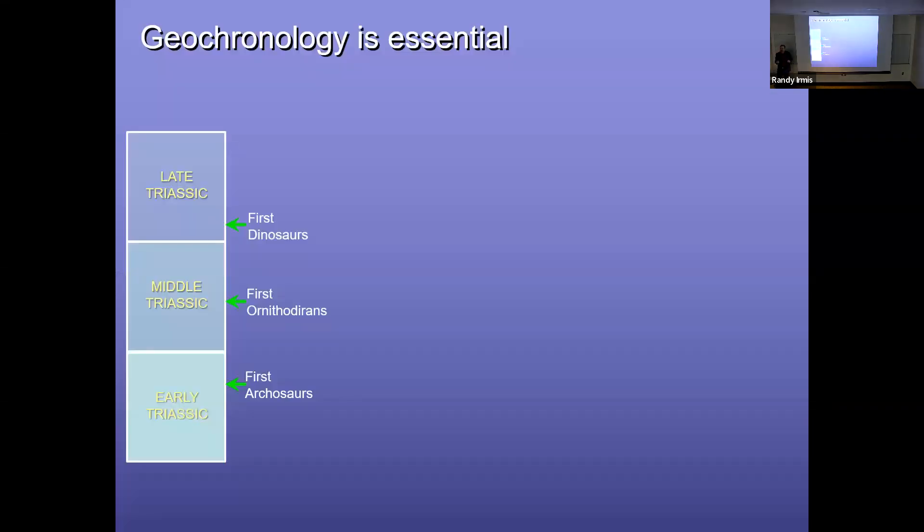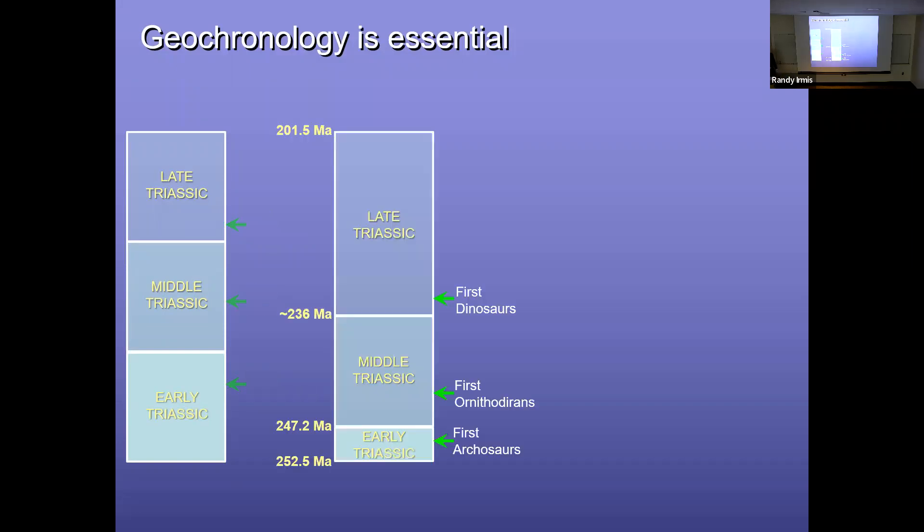So hopefully I don't need to convince you that geochronology, being able to tell time in the geologic record is essential. But this is just an example for my favorite time period, the Triassic. I've got the three divisions of the Triassic period with some different biotic events, including the first dinosaurs here. And you might look at this without a timescale and say, oh well, the first dinosaurs appeared about two-thirds of the way through the Triassic period. But if we actually are able to put some ages to this, we see that there's a big difference. So it turns out the late Triassic is actually half of the entire Triassic period, if not more. And so the first dinosaurs actually appeared about midway through the Triassic period. So geochronology can really change our understanding of the sequence and timing of events relative to when we just have relative dating techniques.